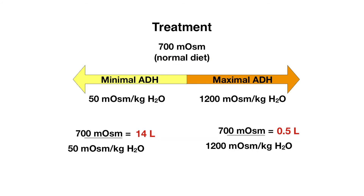Let's say we have a patient coming in with hyponatremia and we've ruled out other causes and do think this is SIADH — how would we go about treating this? To understand the treatment options, we need to understand how the kidney functions. Say a patient follows a typical Western diet and eats about 700 milliosmoles a day, which is the amount that has to be excreted. The kidney can generate urine from anywhere between 50 to 1200 milliosmoles per kilogram depending on the ADH level. At minimal ADH — 50 milliosmoles per kilogram — the person can produce about 14 liters per day. At maximal ADH, urine can be concentrated up to 1200 milliosmoles per kilogram. Dividing 700 by 1200 gives about 0.5 liters — meaning this patient can only excrete about 0.5 liters of urine per day. This is typically the situation we see with SIADH, where there's an inappropriate elevation in ADH levels, so urine output is minimal and urine concentration is very high.